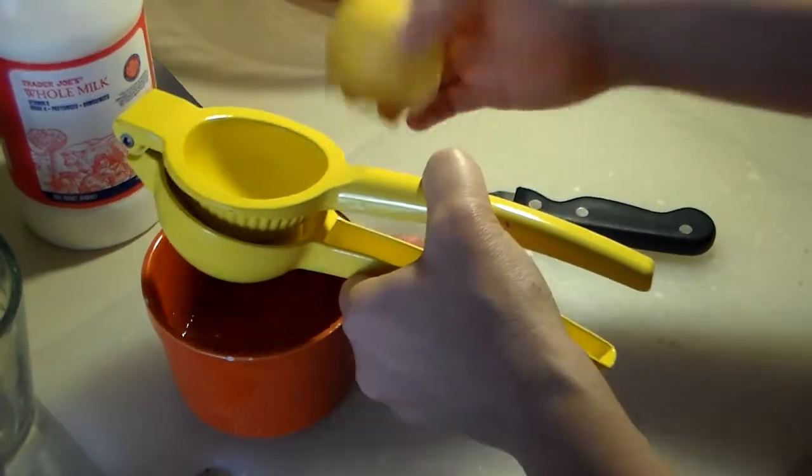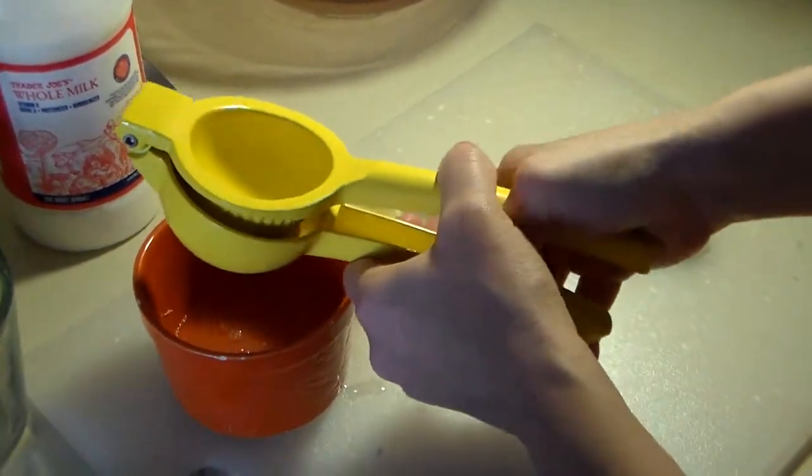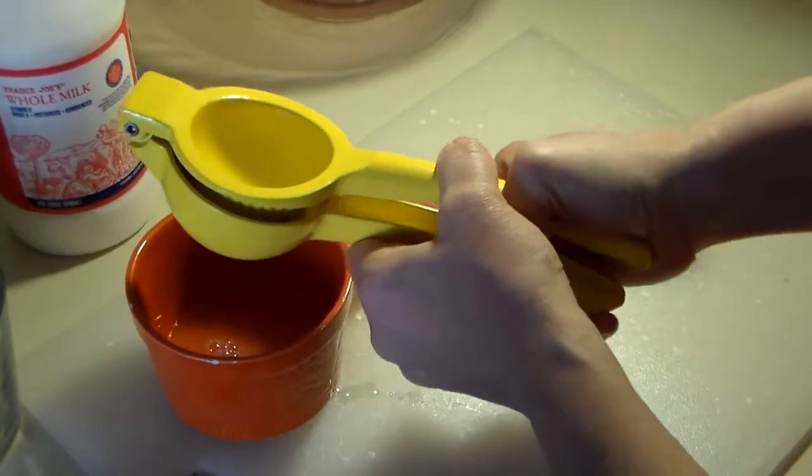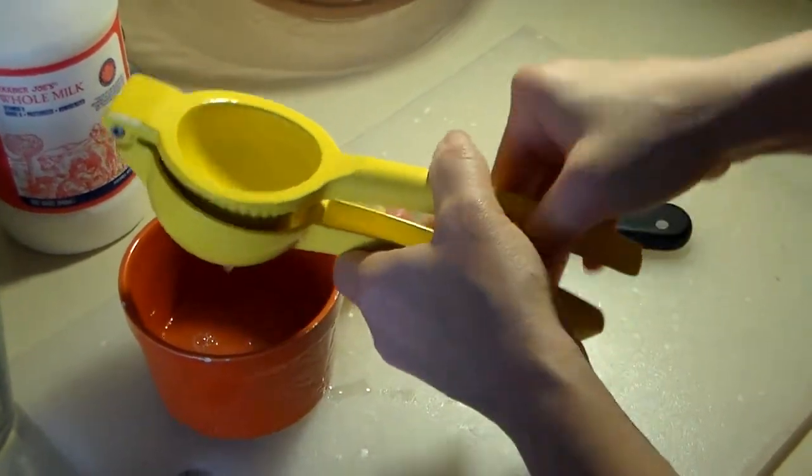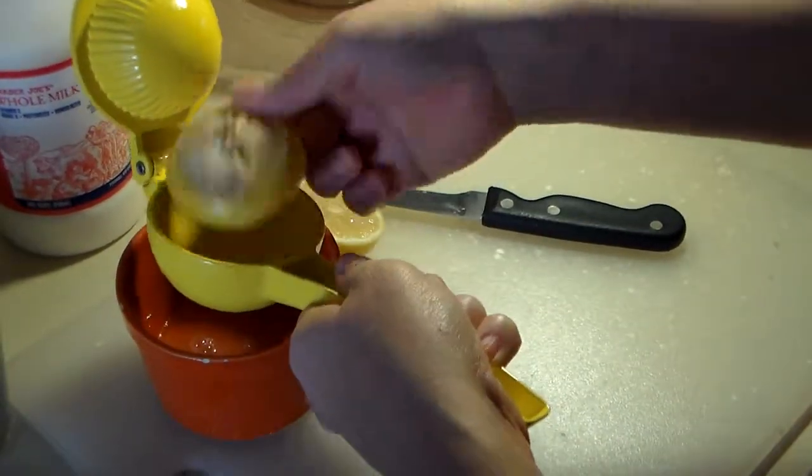So in a lemon this size is probably roughly two tablespoons. For this recipe, in making buttermilk, we're using just one. But I would rather have more than less, because we are going to be measuring it.